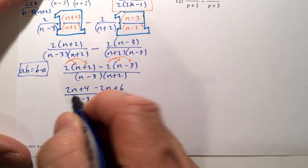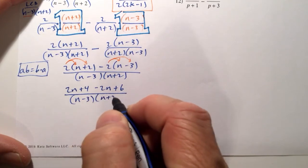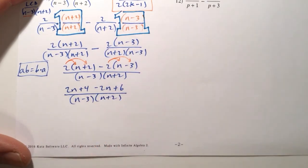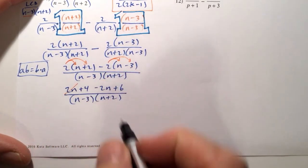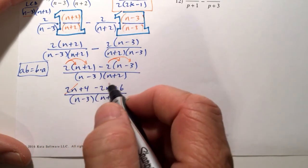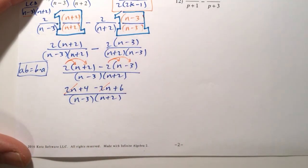And then downstairs, we have an n minus 3. It looks like we're almost done. Multiply by n plus 2. The 2n, combining like terms in the numerator, we have a 2n minus a 2n. Well, those are going to cancel each other out.